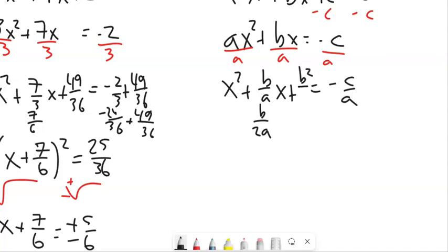2A squared is 4A squared. And if I added it on the left, I've got to add it on the right, so plus B squared over 4A squared. That feels good.